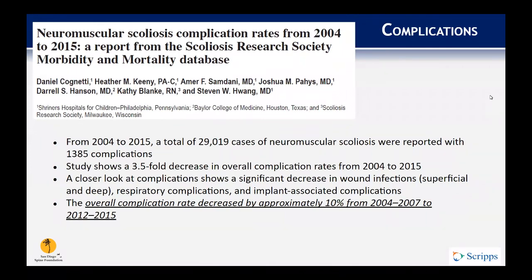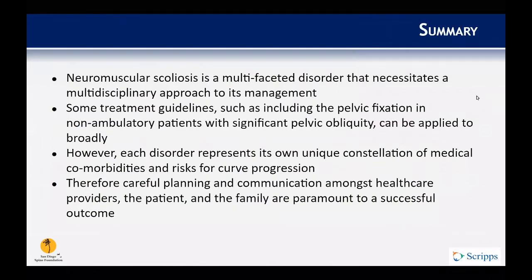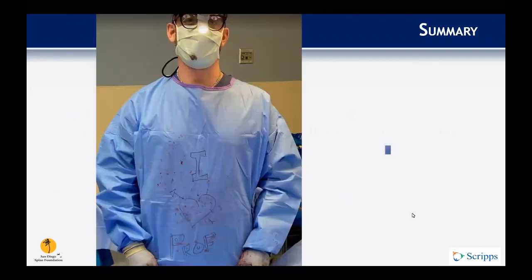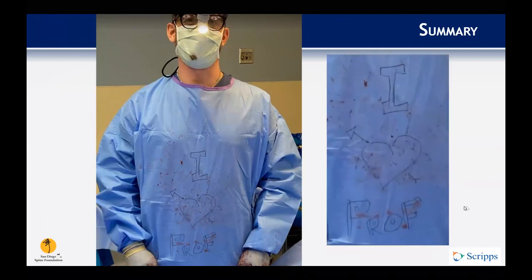In summary, neuromuscular scoliosis is a multifaceted disorder that necessitates a multidisciplinary approach to its management. Some treatment guidelines — such as including pelvic fixation in non-ambulatory patients with severe pelvic obliquity — can be applied broadly. But each disorder represents its own unique constellation of medical comorbidities and risks for curve progression. Careful planning and communication amongst multiple healthcare providers, the interdisciplinary team, and the patient and family are paramount to a successful outcome.